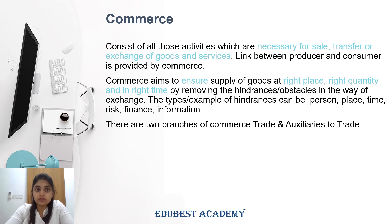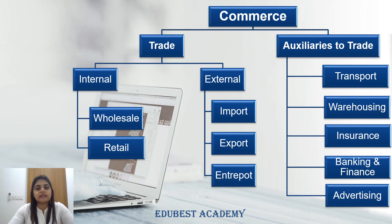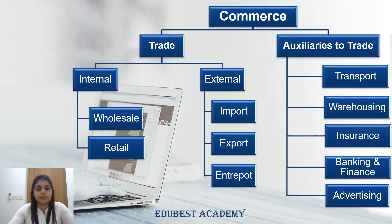There are two types of commerce: trade and auxiliaries to trade. Trade is further divided into internal trade and external trade. Internal trade has two parts — wholesale and retail — and external trade has three parts: import, export, and entrepot. Auxiliaries to trade has five parts: transport, warehousing, insurance, banking and finance, and advertising.